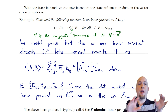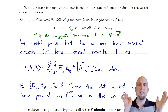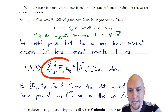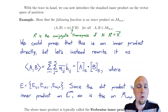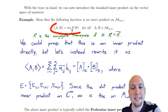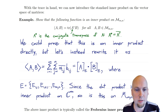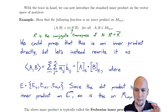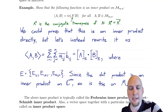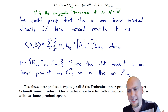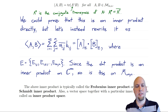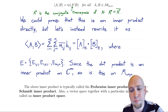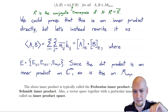If you take A and B, forget that they're matrices, list all their entries in a vector with mn entries, and take the dot product, you get exactly this sum. Since we already know the dot product is an inner product, this expression is an inner product too — you can leach all the properties off of the dot product on C^{mn}. So really, this inner product is the dot product on the space of matrices. It's also called the Frobenius inner product — a name we'll use occasionally in this course — or sometimes the Hilbert-Schmidt inner product, though we won't use that name here.